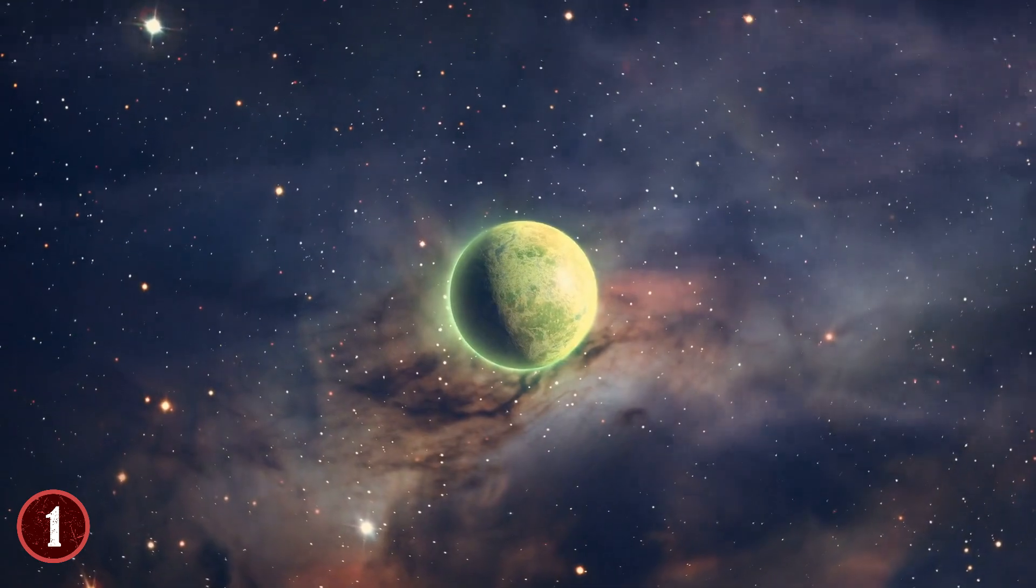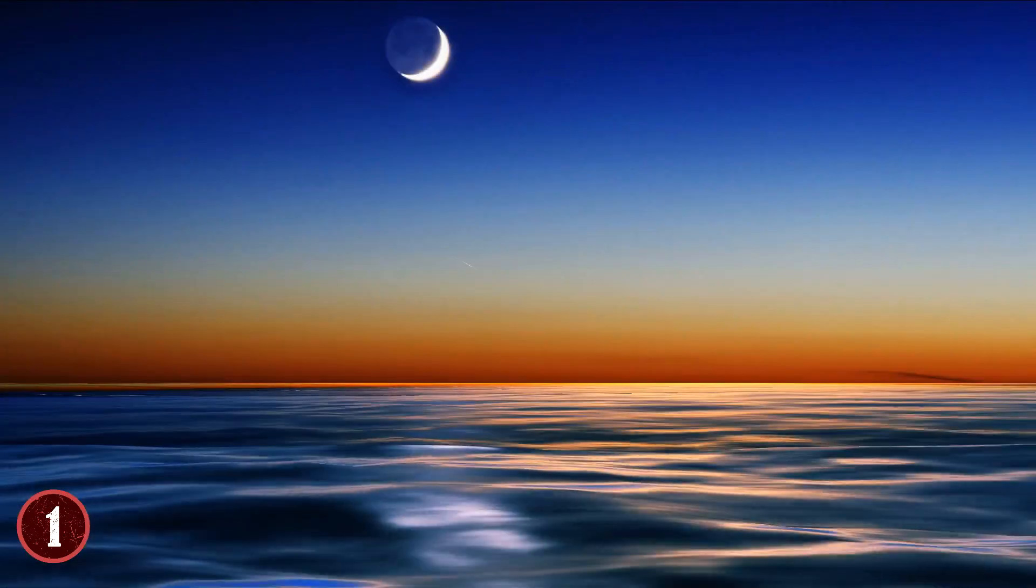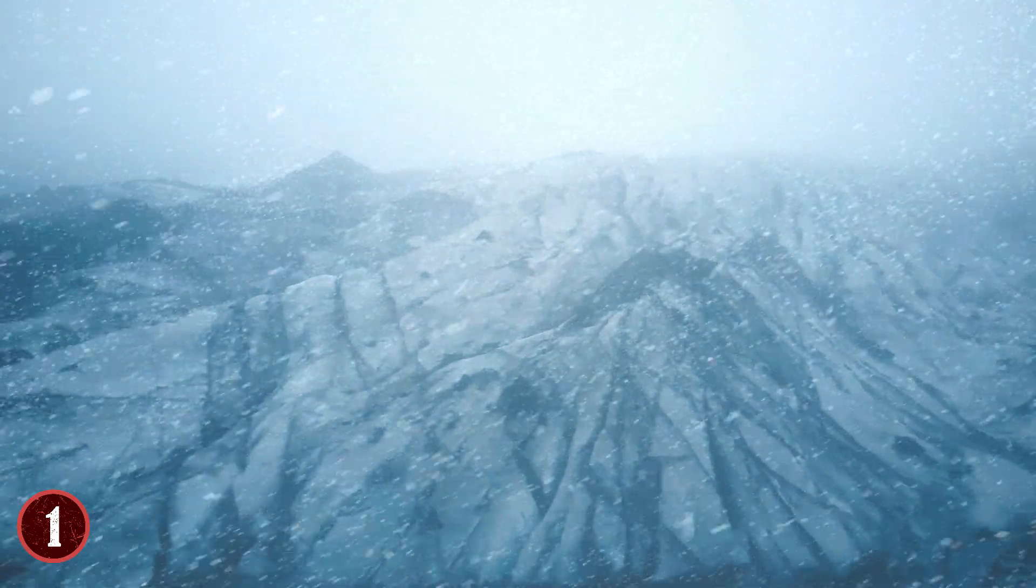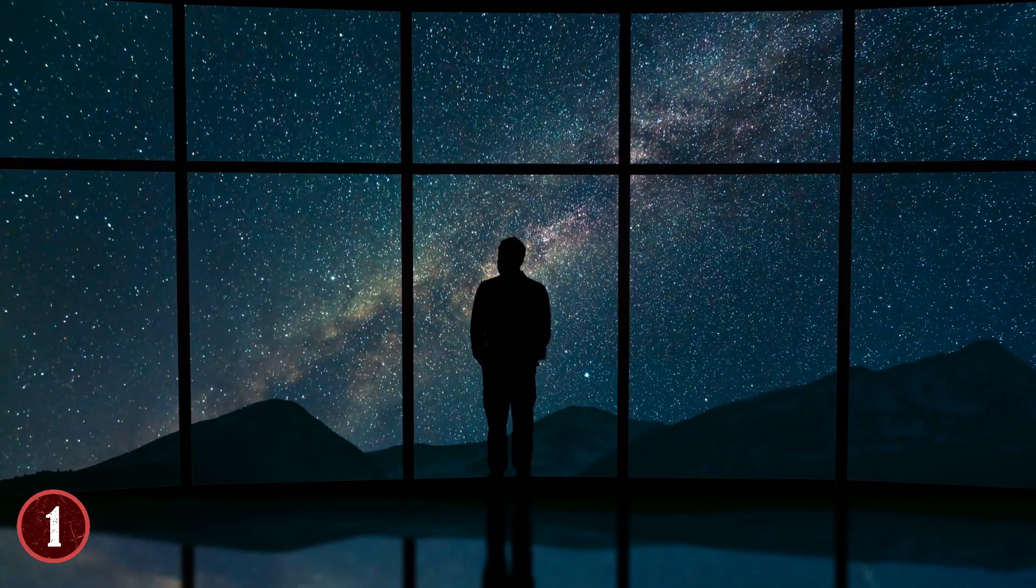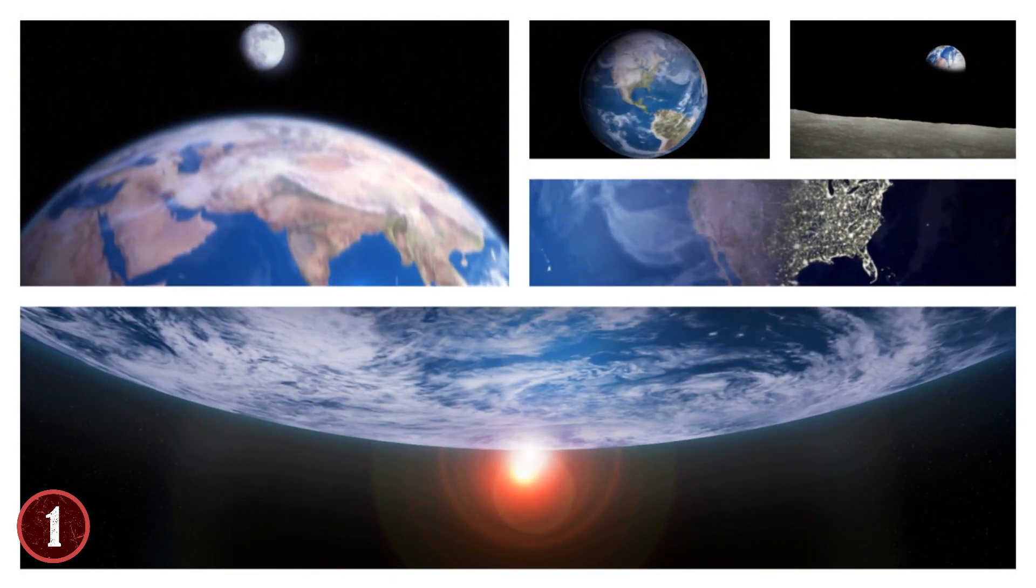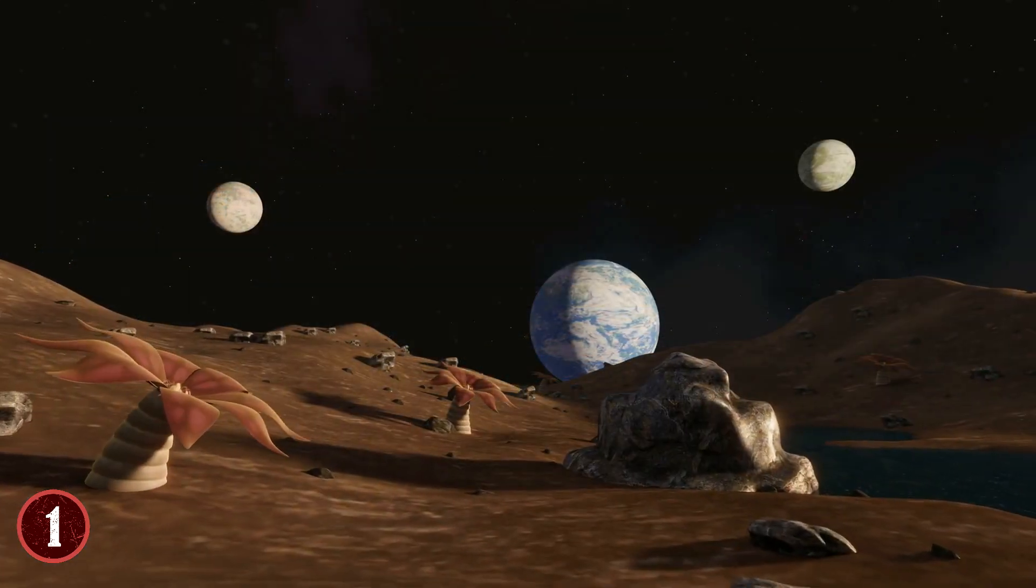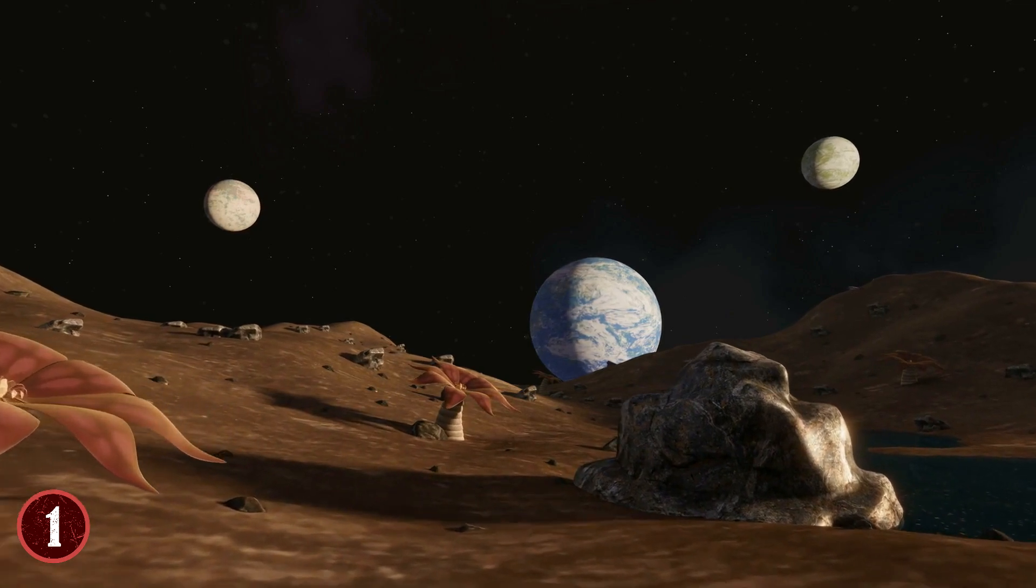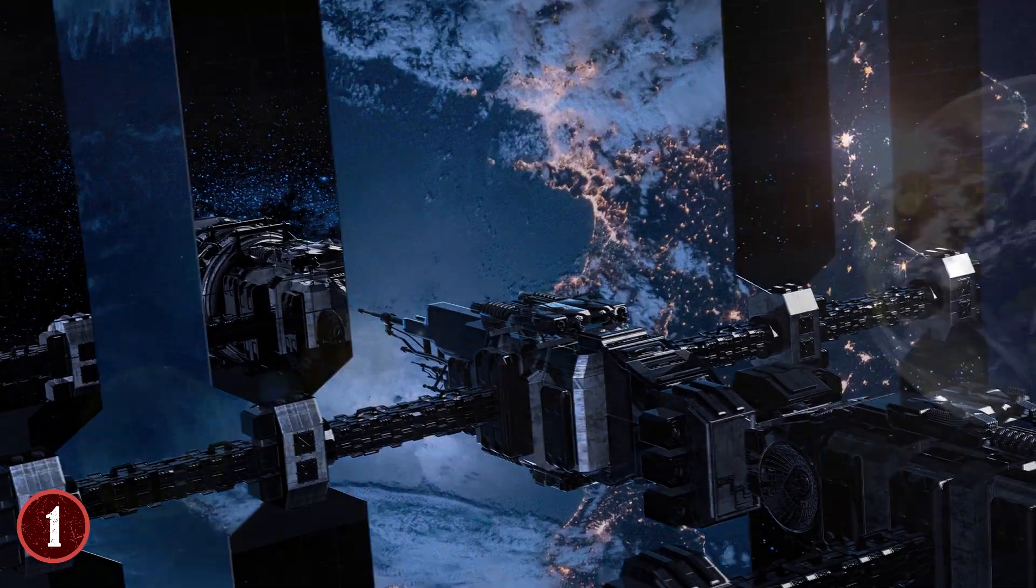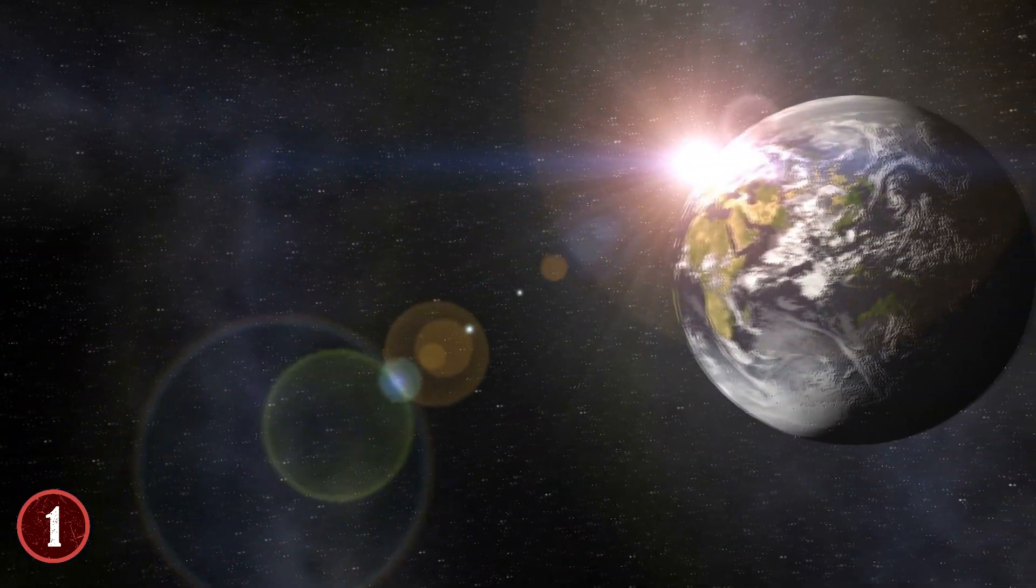Either the atmosphere doesn't have the same effects, the planet is gaseous and thus has no land masses, is covered in water, or has many other factors that make it a close but no cigar situation. If the universe is truly random, why is it that there's only one Earth-like planet that we can see amongst the stars?